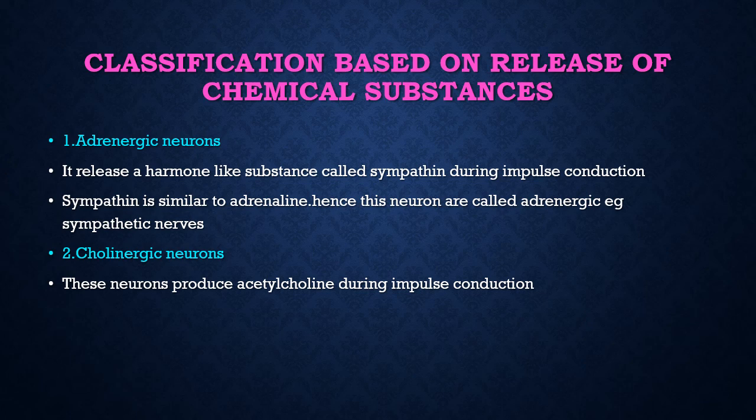Next is classification of neuron based on the release of chemical substances, again divided into two types: adrenergic neuron and cholinergic neuron. Adrenergic neuron releases a hormone-like substance called sympathin during impulse conduction, which is similar to adrenalin secreted by the adrenal gland. Example is sympathetic nerves. Cholinergic neuron produces acetylcholine, with the help of which impulse will be transmitted. These are all the different ways of classifying neurons. Thank you.